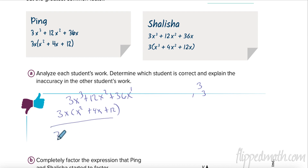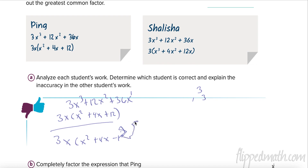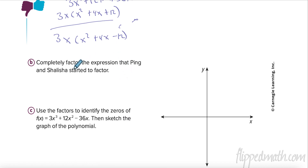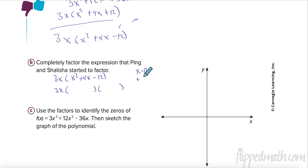The book makes a mistake, so we're going to change the problem to include minus 12. So I have 3x times (x² + 4x - 12). Now I have to factor what's inside into two binomials: two numbers that multiply to negative 12 and add to 4. Negative 2 and 6 add to 4, so the factors are (x - 2) and (x + 6).